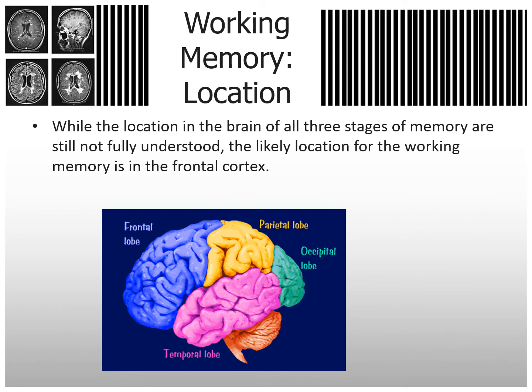The location of working memory: while the location in the brain of all three stages of memory is not fully understood, the likely location of working memory is the frontal cortex. We talked about the frontal cortex dealing with decision-making and processing. We think working memory is in the frontal lobe, while new memories are stored in the hippocampus.